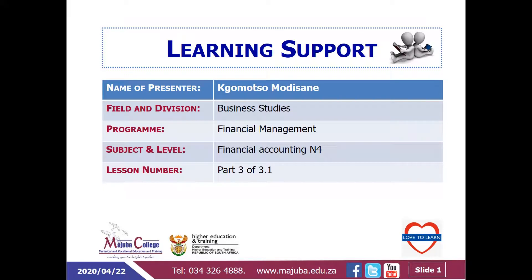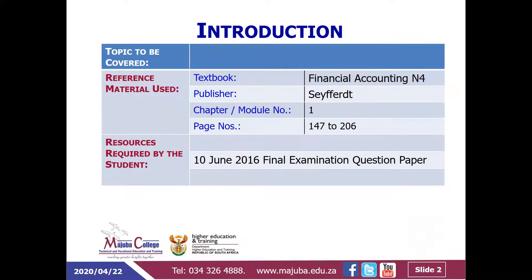Hi, my name is K-Mott. This is a continuation of the drafting of the income statement for Financial Accounting N4, and I'll be looking at the caution paper which was written on June 2016. For ease of reference, I'd like to refer to this presentation as Part 3 of 3.1.